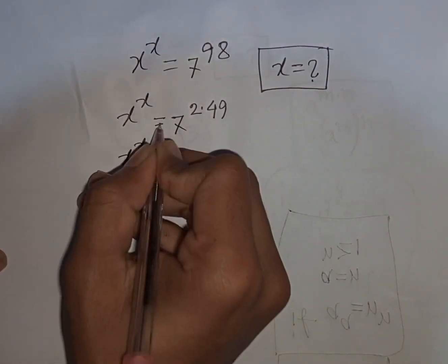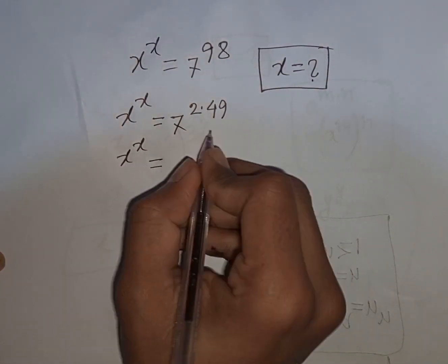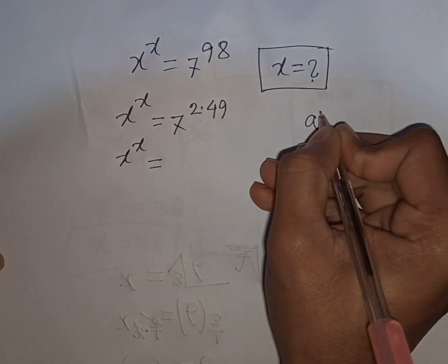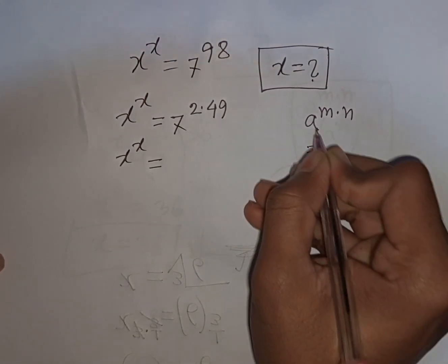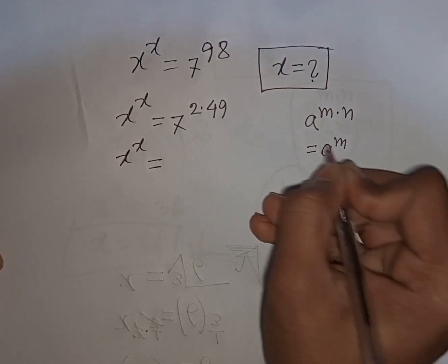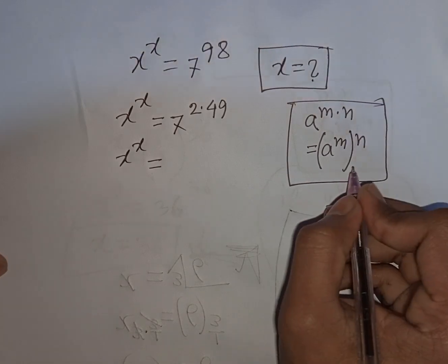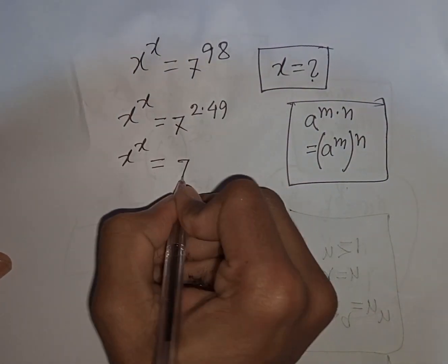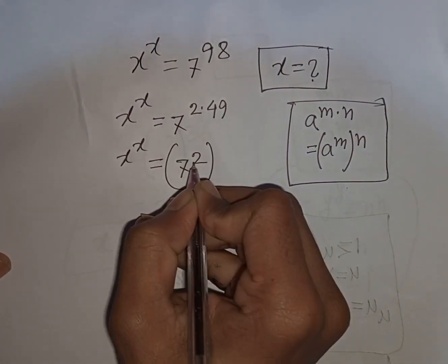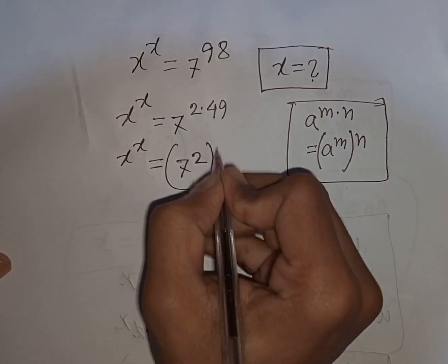x to the power x equals—here you can apply this exponential rule that a to the power of m times n equals a to the power m in brackets to the power n. So according to this rule, you can write here 7 to the power 2, then bracket power of 49.